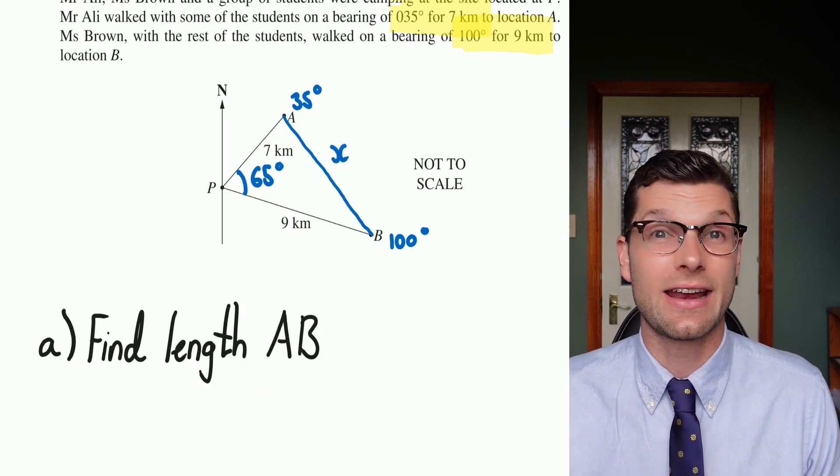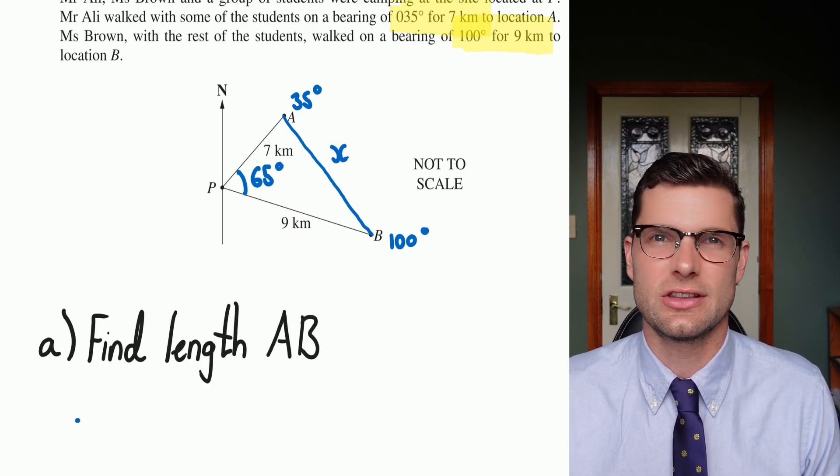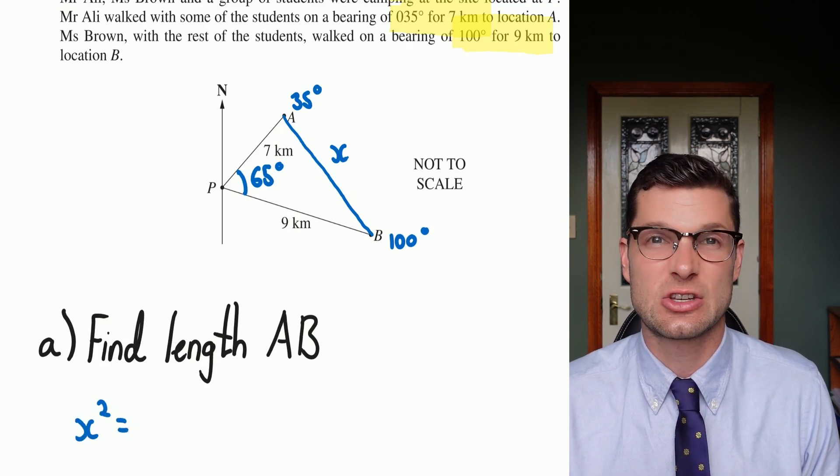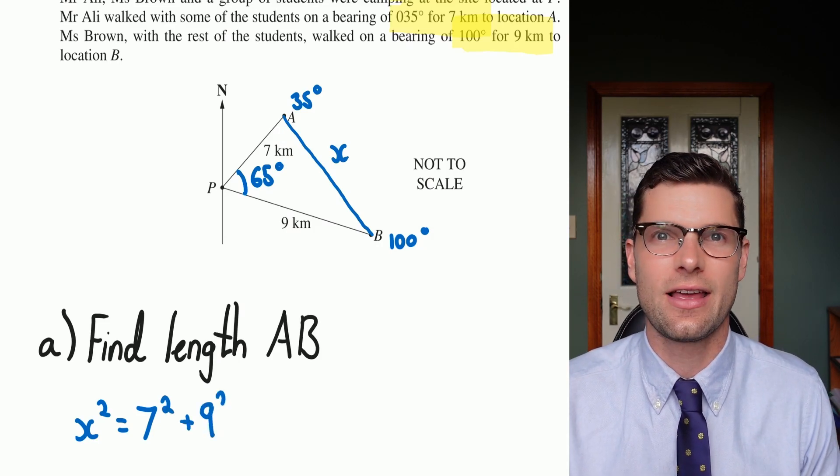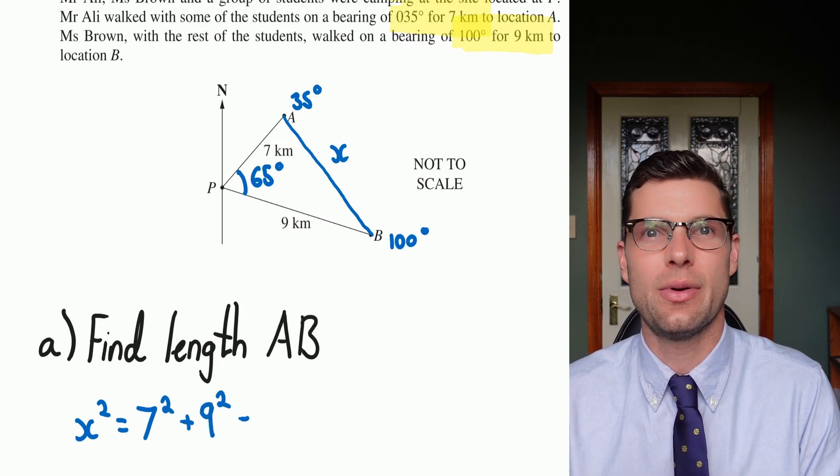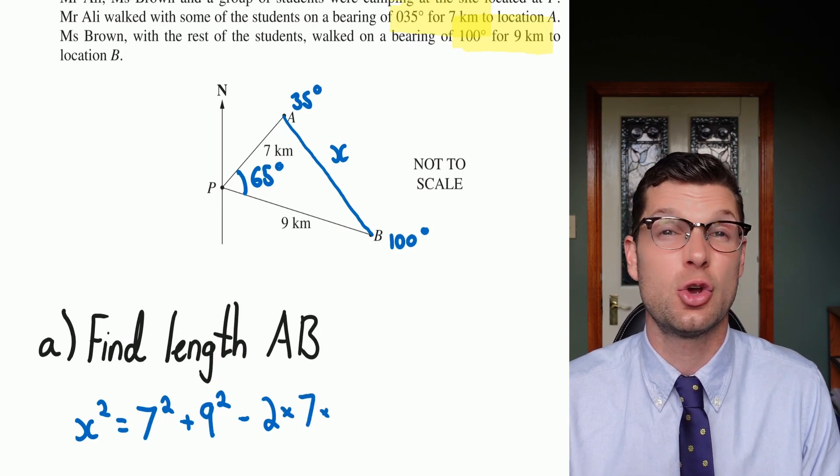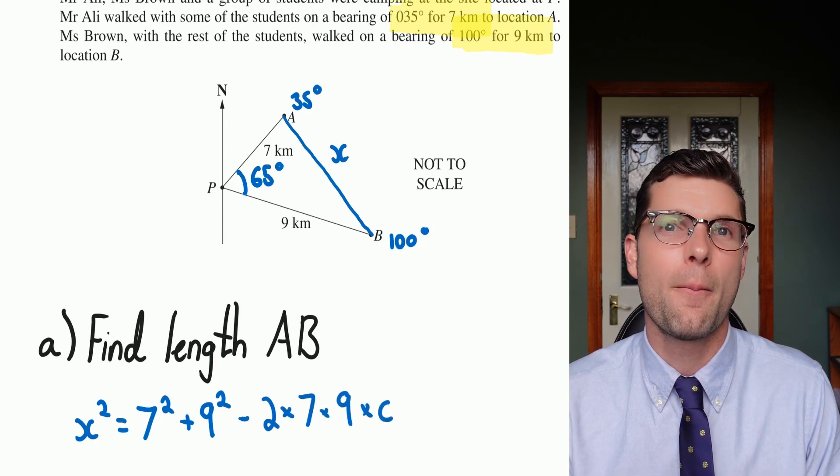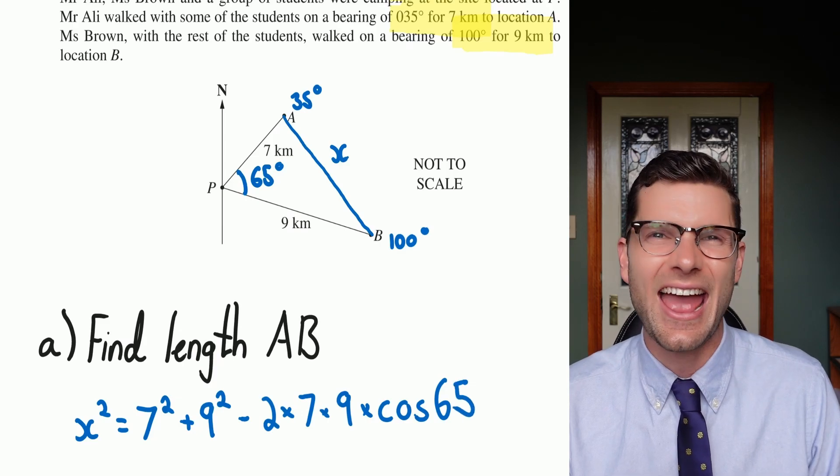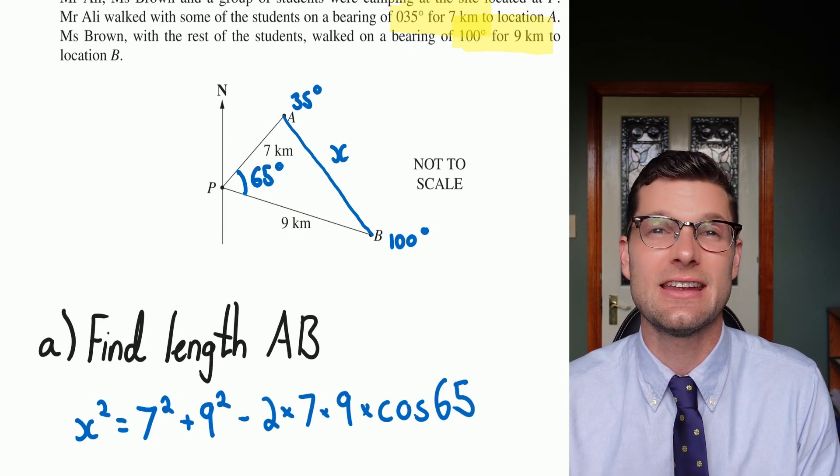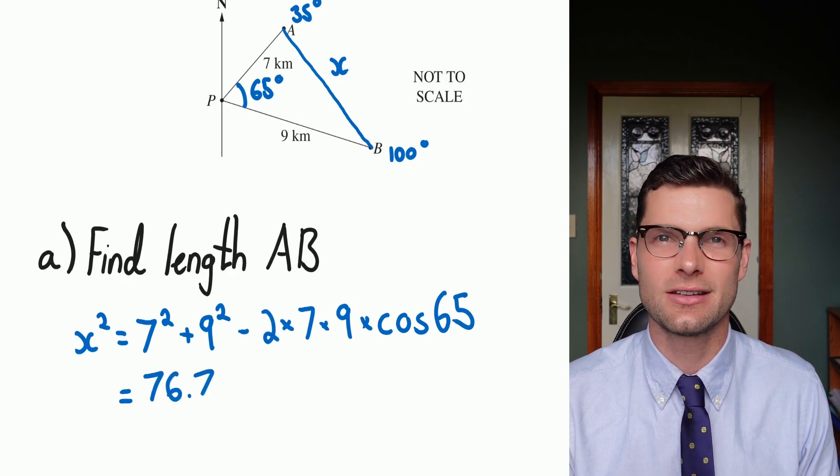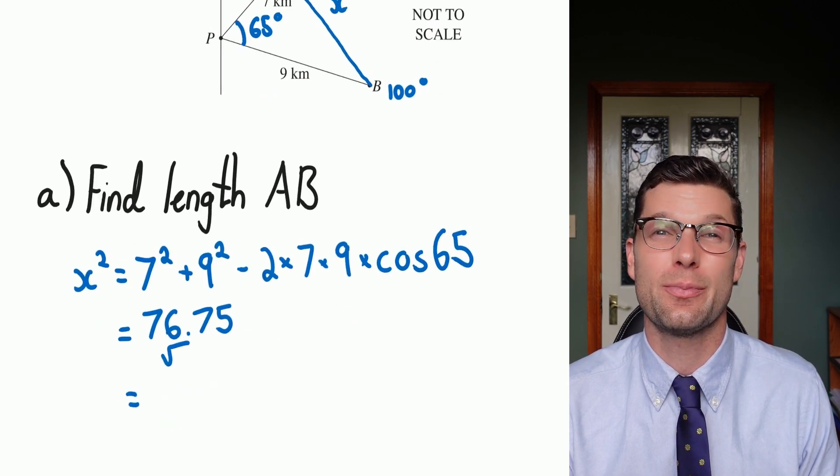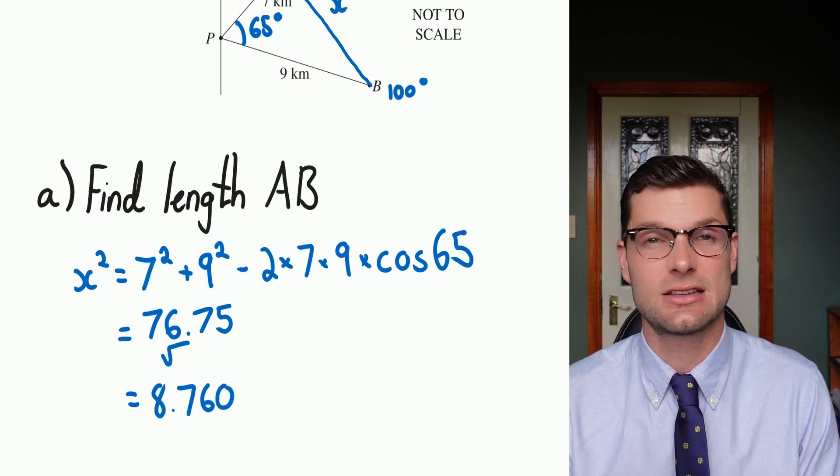Now I've got that angle, I can actually find the length AB, and again, I'm going to use the cosine rule. So I've got x squared equals seven squared plus nine squared, or the two side lengths, minus 2AB cos C, which is two times seven times nine, multiplied by cos 65. Again, you've got to make sure that your answer fits in, and you've got to root your answer. So as long as you do that, you're going to be correct. Our final answer for this one's going to be 8.76 kilometers.